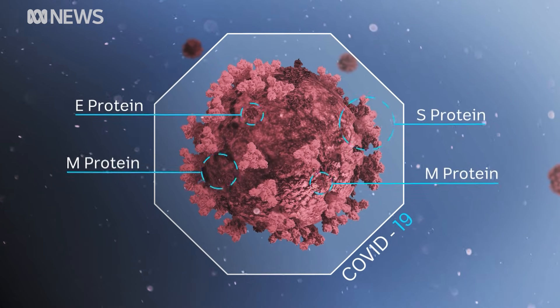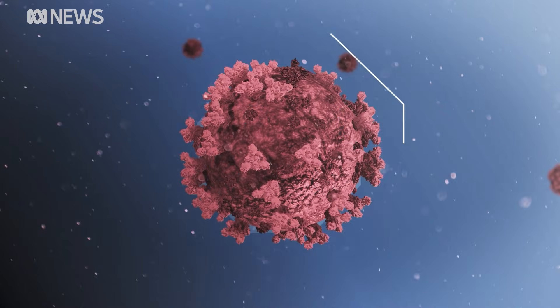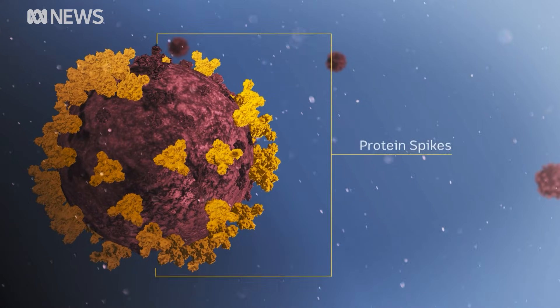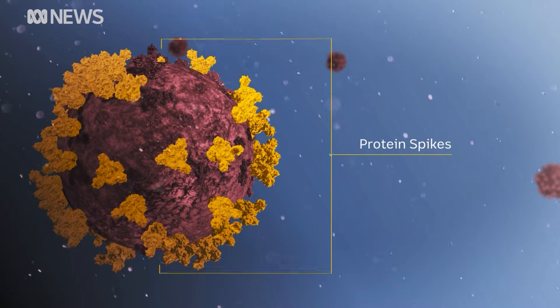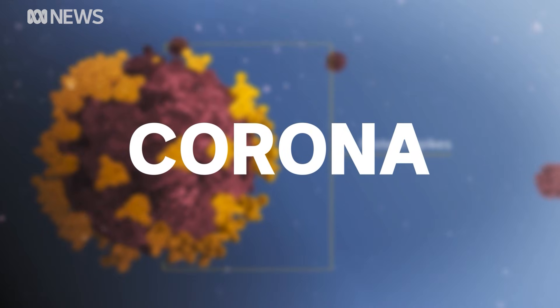Each cell of the virus is made up of several parts. On the outside, it's covered in nodules topped with distinctive protein spikes. It's these spikes that give the coronavirus family its name.